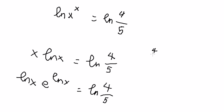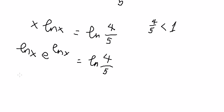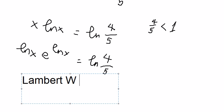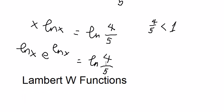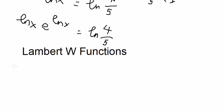But 4 over 5 is smaller than number one, so in this situation we have two solutions and we use Lambert W functions. So we will have W_0.